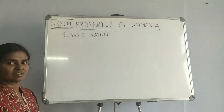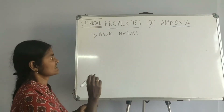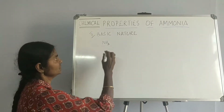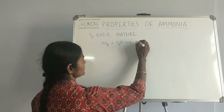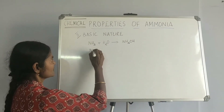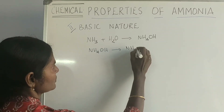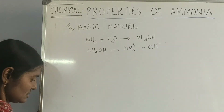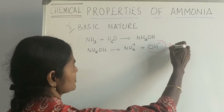The next property we see is the basic nature of ammonia. Ammonia is highly soluble in water, so when it reacts with water you get ammonium hydroxide. This ammonium hydroxide splits into ammonium ions and hydroxyl ions. It is the presence of this hydroxyl ion that makes it a base.